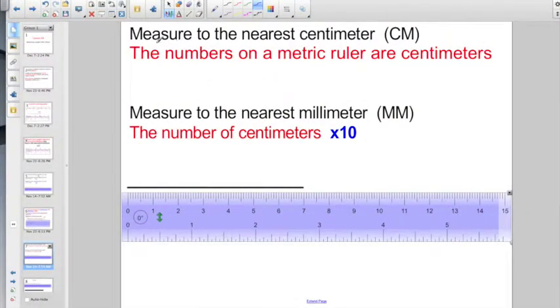Check out this one. Measure to the nearest centimeter. And, as a reminder, I said the numbers on a metric ruler are centimeters. And, if I had to measure to the nearest millimeter, I would just take the number of centimeters and times it by ten. So, if it's seven centimeters, it is seventy millimeters.